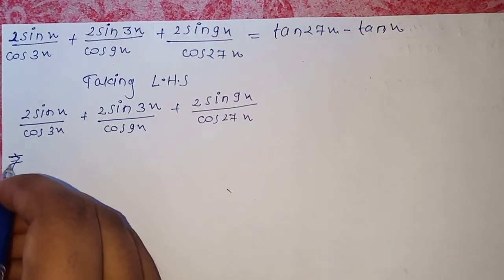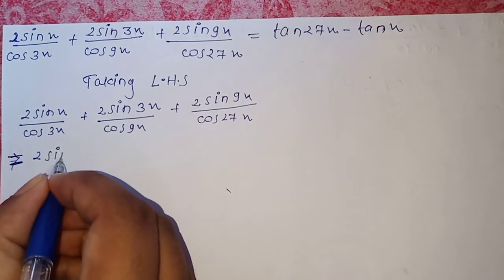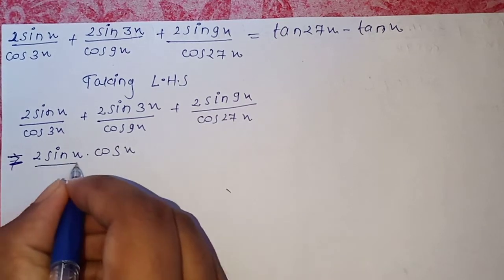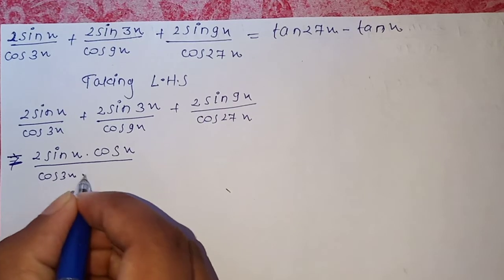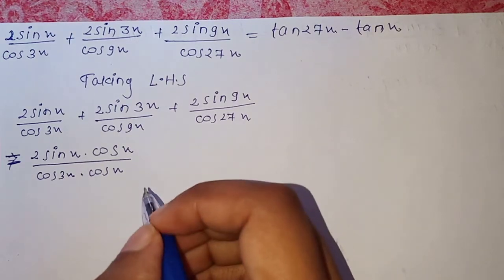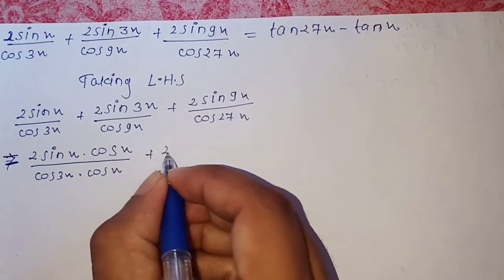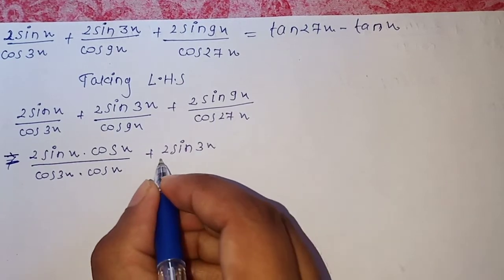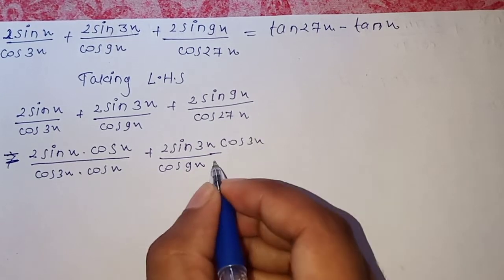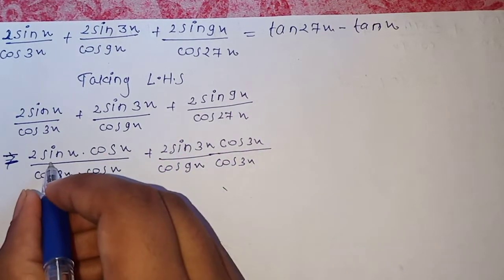We multiply: 2sin(x)·cos(x) / (cos(3x)·cos(x)). Using the formula 2sin(x)cos(x) = sin(2x), and similarly applying 2sin(3x)cos(3x) formula for the second term.